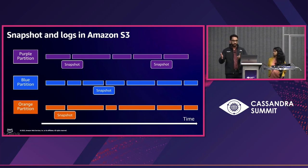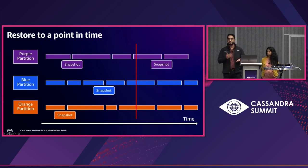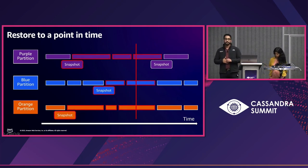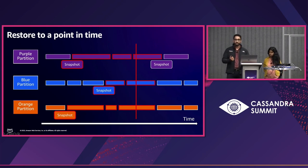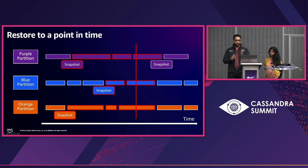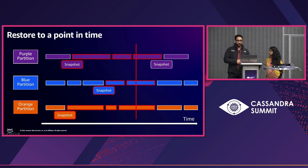At any point in time, we have multiple snapshots and logs for the table in S3. If you accidentally delete data or make unintended updates, Keyspaces makes it simple to recover. We take a restore time from you, validate it falls within the past 35 days, then go into S3 to find the most recent snapshot before that time. We get the logs between the snapshot time and restore time, apply forward any changes, and do this across all partitions, resulting in the fully restored table.